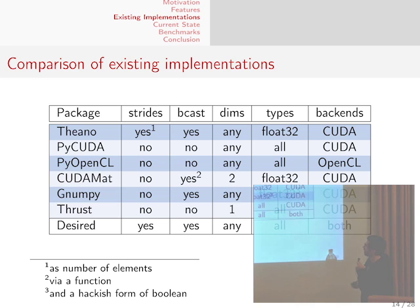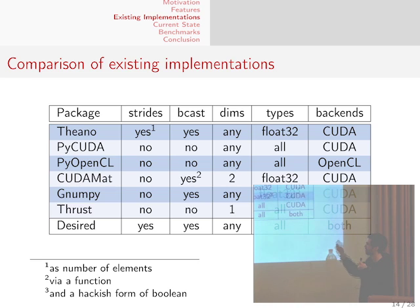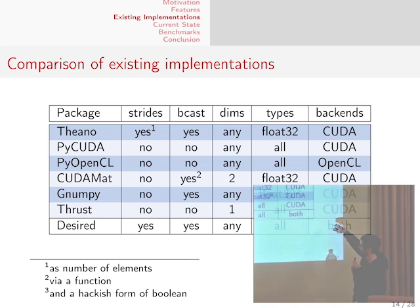Looking at a comparison of supported features across implementations, strides and broadcasts are pretty much only supported by Theano. Since it's much easier to add more types and strides to an existing implementation, we started with the Theano code as our base because it better matches what we want.